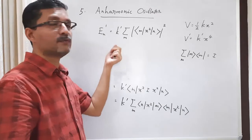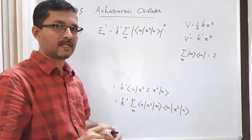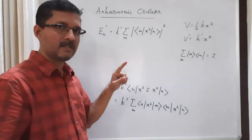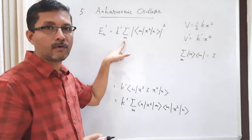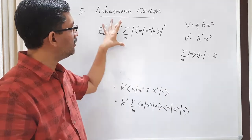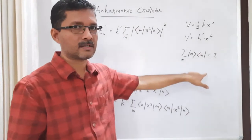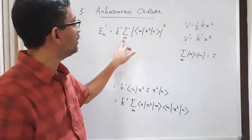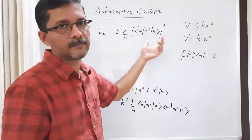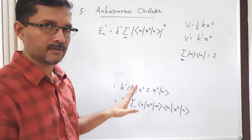Do not confuse this with the expression in the second-order correction in energy. The important difference is that in second-order correction, the summation excludes m = n. Here, the summation involves all m states because it is the completeness condition — so all m states are included, even m = n. Also, there is no energy-difference denominator E⁰ₙ − E⁰ₘ here.